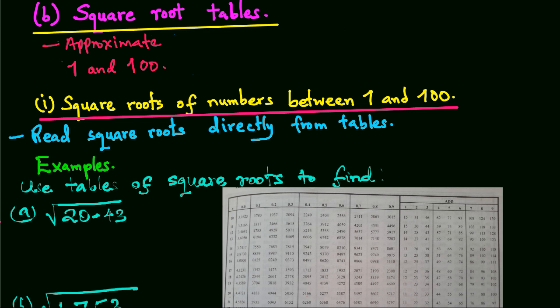If we have a number less than 1 or greater than 100, we have to modify it such that it gives us values that we can read from the tables. So we are going to consider square roots of numbers between 1 and 100, and square roots of numbers less than 1 or more than 100.